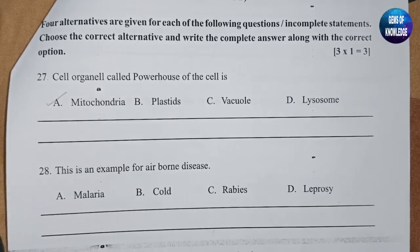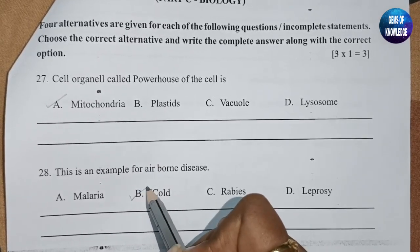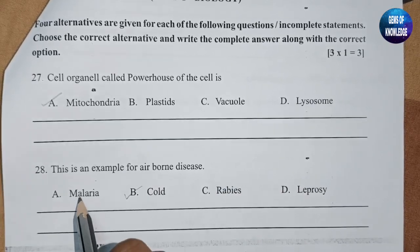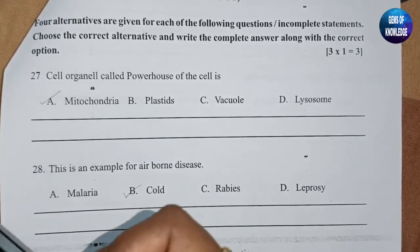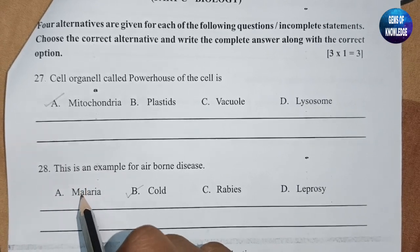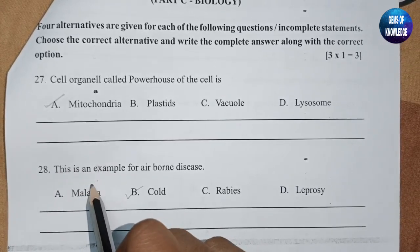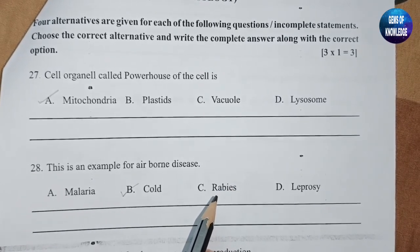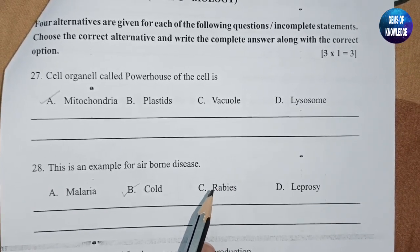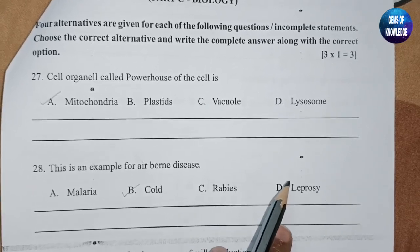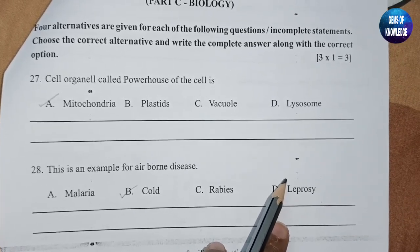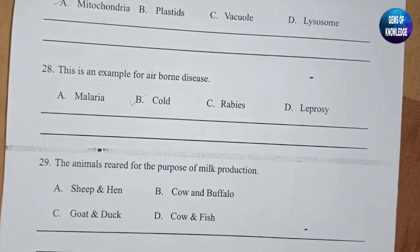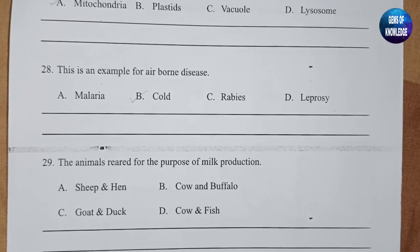The next question is an example of an airborne disease. An airborne disease is common cold — common cold is an airborne disease. Malaria is spread through mosquitoes, rabies is caused when we are bitten by dogs, and leprosy is a bacterial disease — it is not an airborne disease.